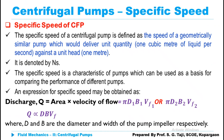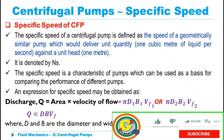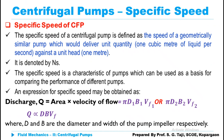In case of turbines, we have used the specific speed term to compare different turbines, like a Francis turbine and Pelton turbine, both working under different conditions. Whenever you are going to compare the performance of those two turbines, it is quite difficult to compare them directly. But by using specific speed, you can easily compare their performance. Similarly, we can use the specific speed term in the case of centrifugal pumps as well, for comparing the performance of different pumps.